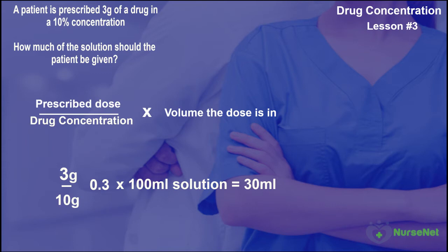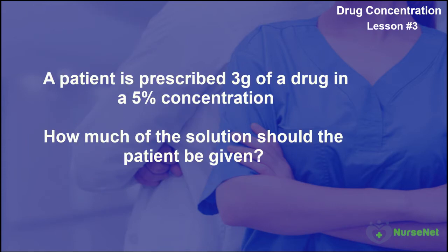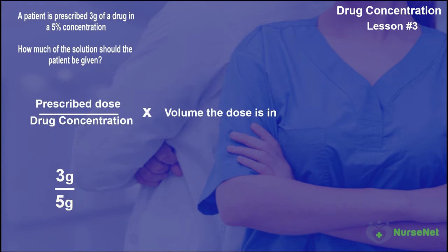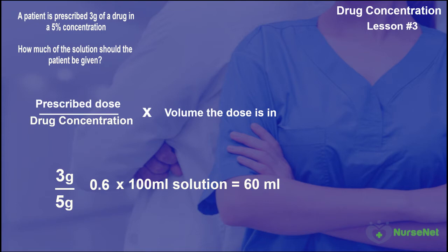Let's do another example. A patient is prescribed 3 grams of a drug available in 5% concentration. How much of the solution should the patient be given? We know that 5% concentration is equivalent to 5 grams in 100 milliliters of solution. So crunching the numbers: 3 grams divided by 5 grams gives us 0.6. 0.6 multiplied by 100 milliliters gives us 60 milliliters of solution.